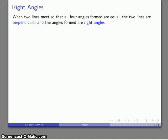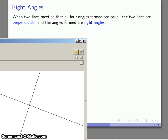Now we can consider a special case. Imagine that I have two straight lines meeting in such a way that all four angles that you form are equal. In that particular case we say that the two lines are perpendicular and the angles that we form are right angles.